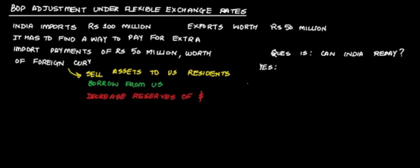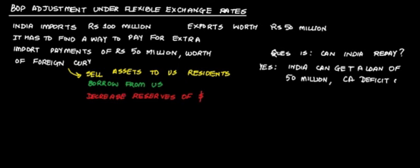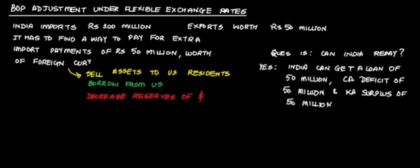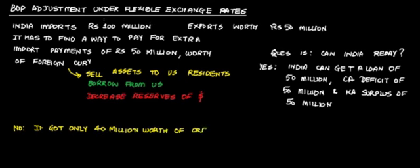In that case, India will have a current account deficit of 50 million rupees and a capital account surplus of 50 million rupees. It could also be that India can get only 40 million rupees worth of credit — so what about the remaining 10 million? It has to go to the foreign market.